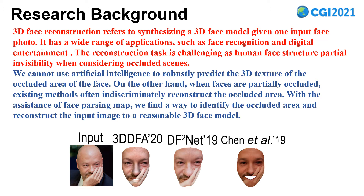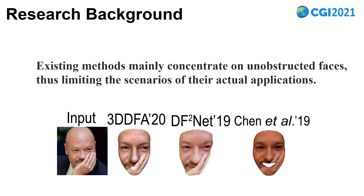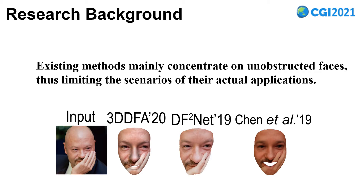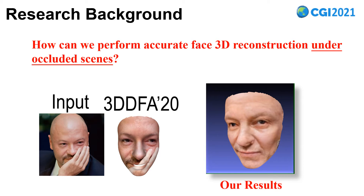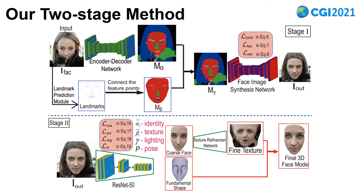On the other hand, when faces are partially occluded, existing methods often incorrectly reconstruct the occluded region. With the assistance of the present map, we found a way to outperform existing approaches and reconstruct the input image to a reasonable 3D face model. We found that existing methods mainly concentrate on unoccluded faces. When encountering occluded things, these methods often fail.